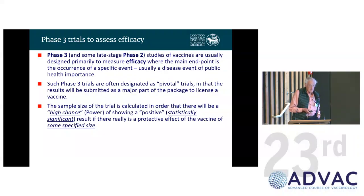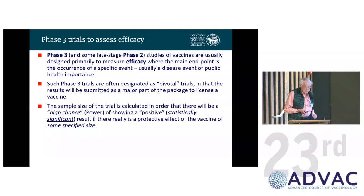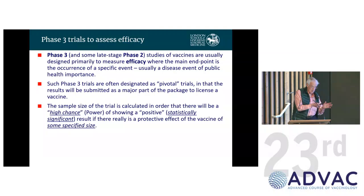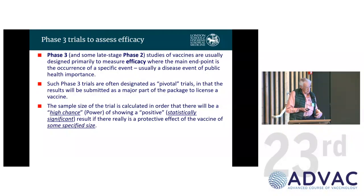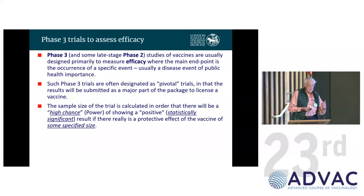I'm going to focus mainly on phase three trials and some late phase two trials for more common conditions like malaria. These are usually designed primarily to measure efficacy. They're often called pivotal trials — the main part of the package submitted to a regulatory agency to decide whether the vaccine will be licensable. The sample size is calculated so there is a high chance — the power of the trial — of showing a statistically significant positive result demonstrating a real protective effect of a specified size.